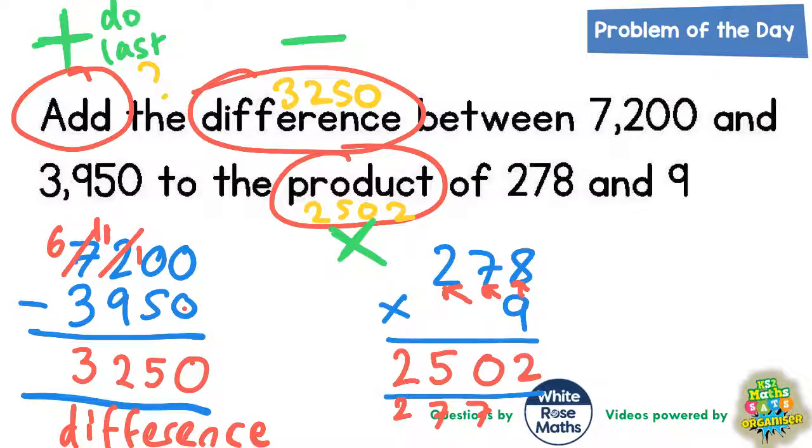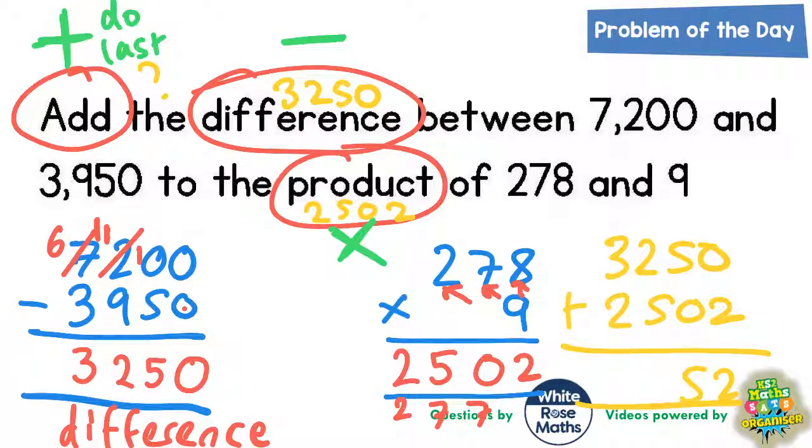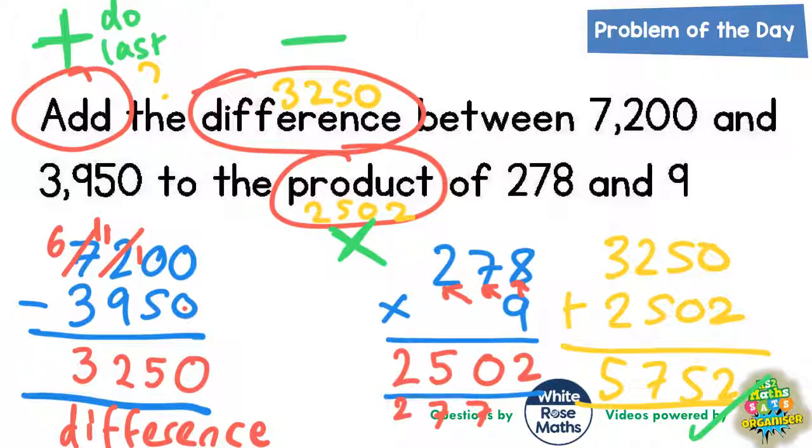So that's what we need to do. So the final bit of the question is 3,250 add 2,502. Let's see what that brings us. 0 plus 2 is 2. 5 plus 0 is 5. 2 plus 5 is 7. 3 plus 2 is 5. Final answer, 5,752.